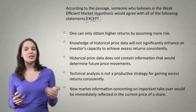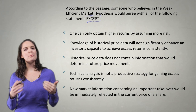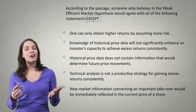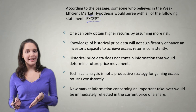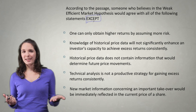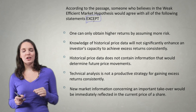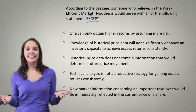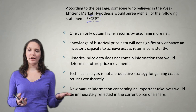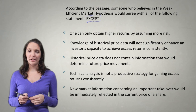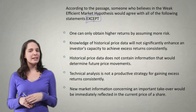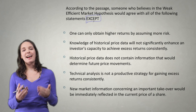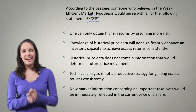Our strategy is to go through each answer choice one by one, match it to the passage, and ask: would someone who believes in weak EMH agree with this? If so, eliminate it; if not, that's our answer. That overall structure of the passage we looked at is going to be really helpful here. Where did it talk about the weak EMH theory? A little bit in the introductory paragraph, but mostly in the second paragraph. So for the purposes of this question, I can pretty much ignore the third and fourth paragraphs entirely, which really helps me focus.